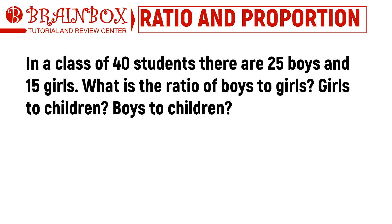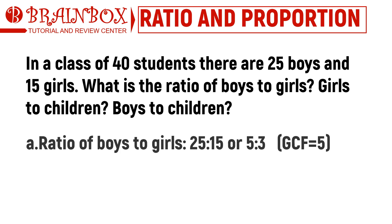For the first question, we are being asked for the ratio of boys to girls. As mentioned in the problem, there are 25 boys and 15 girls. Hence we can write the ratio as 25 to 15. But take note that the ratio can still be reduced to lowest terms — the GCF of 25 and 15 is 5. We can divide both parts by 5, which gives us the final answer: 5 to 3.